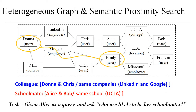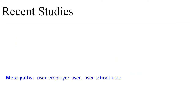We take the semantic proximity between Donna and Emily as an example. Prior work often tries to measure the proximity by paths connecting two objects. Metapath proximity counts the number of metapath instances between two nodes to measure the proximity, such as user-to-employer-to-user or user-to-school-to-user.